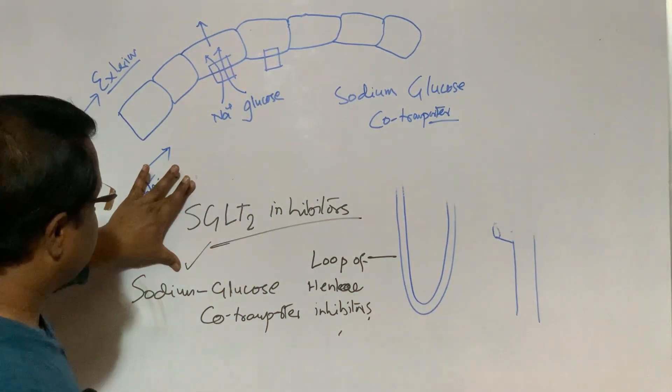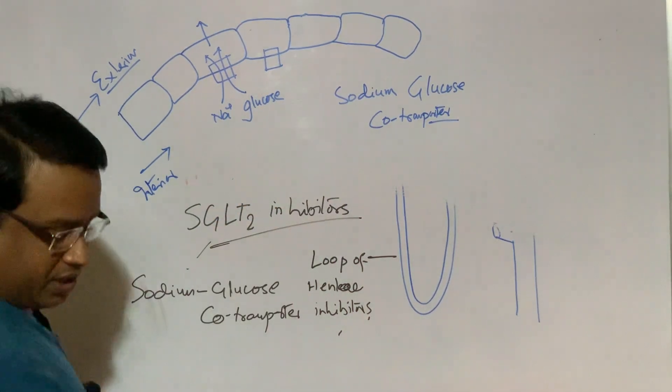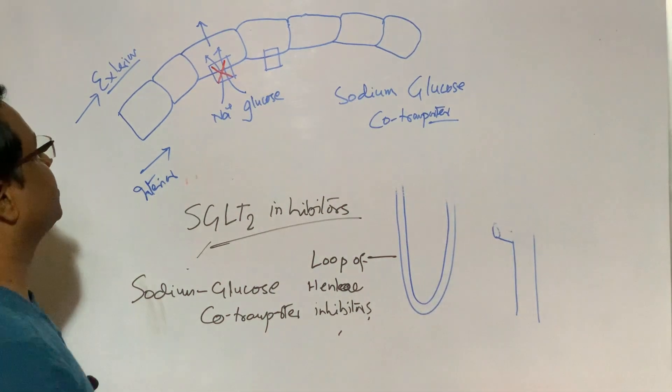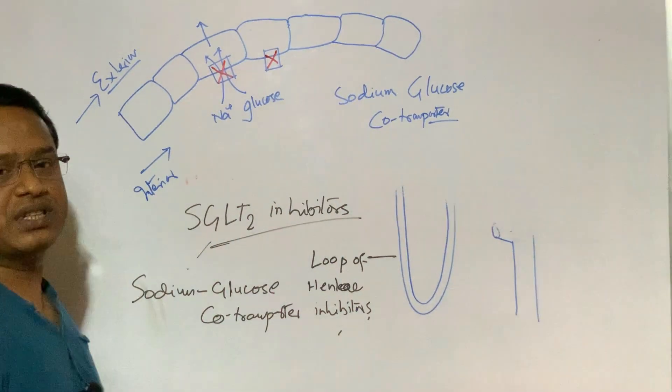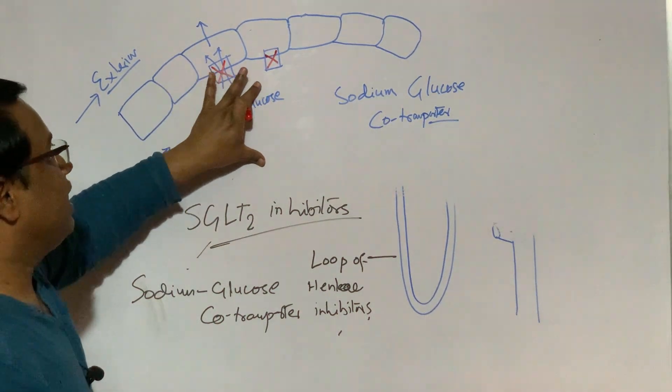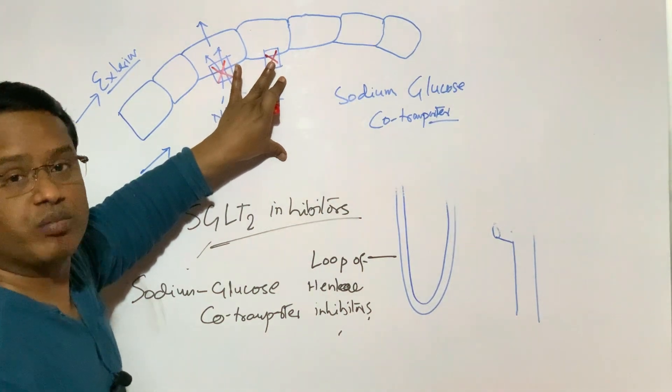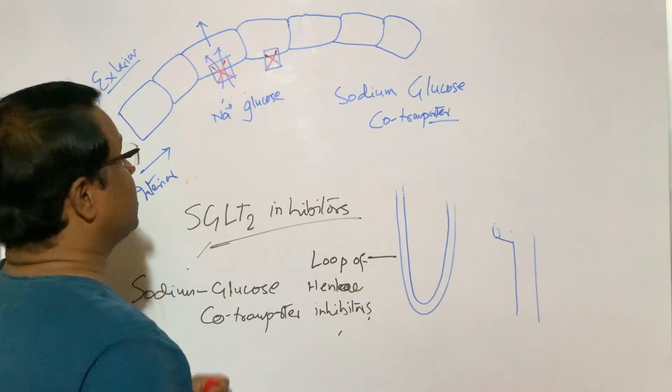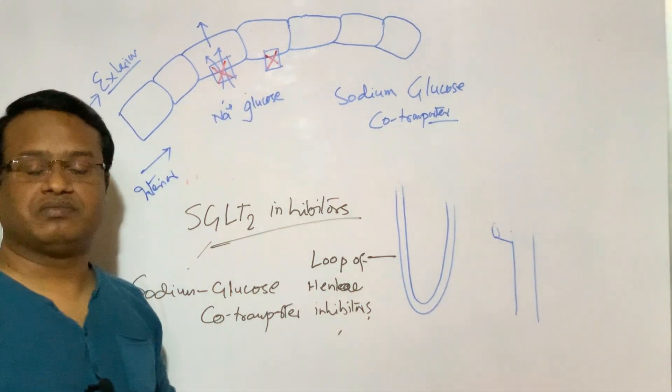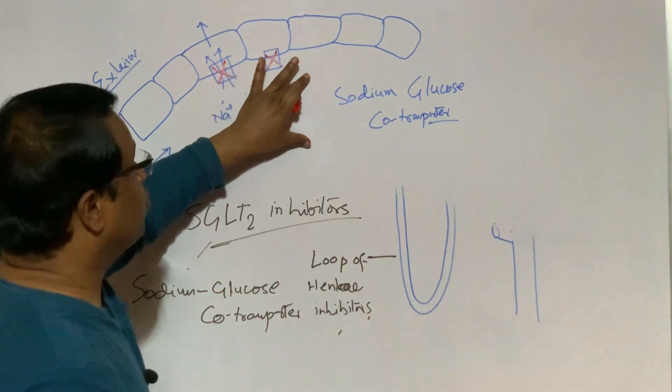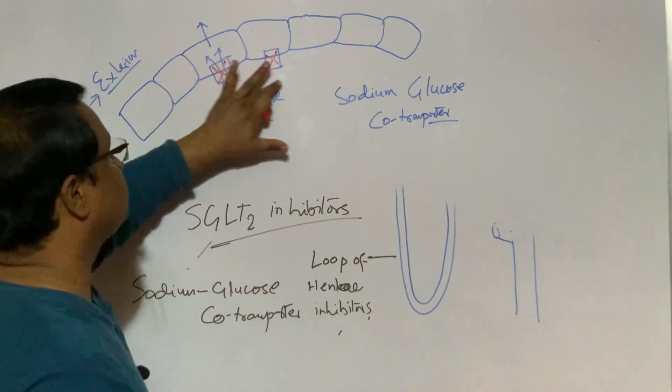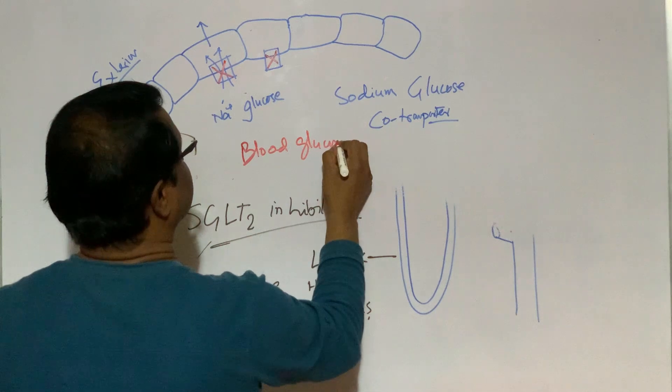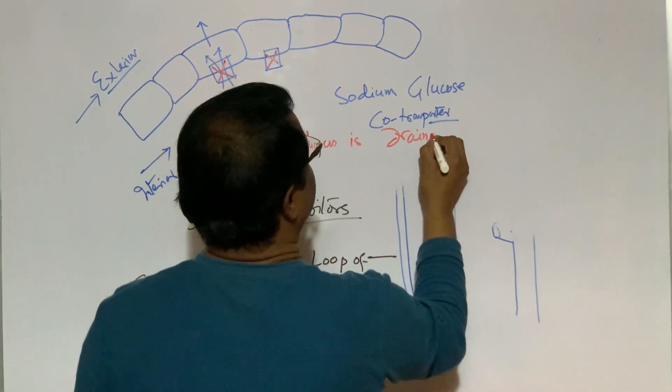So, after absorption of total glucose, we cannot find glucose in our urine in normal circumstances or normal situation. Here, in SGLT2 inhibitors, we just block this receptor. As a result, sodium and glucose is not absorbed. This continues to flow throughout the nephron and passes with urine. And by this way, the body glucose is reduced. Blood glucose becomes reduced.